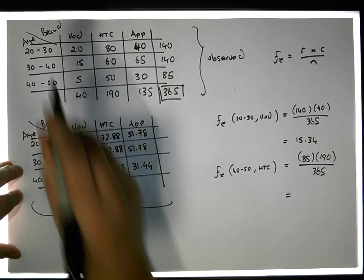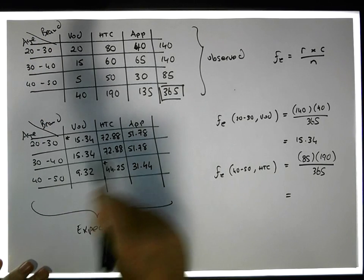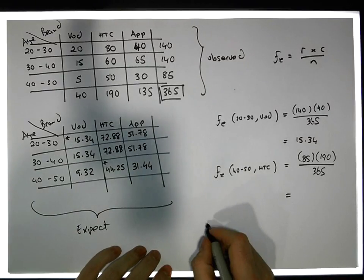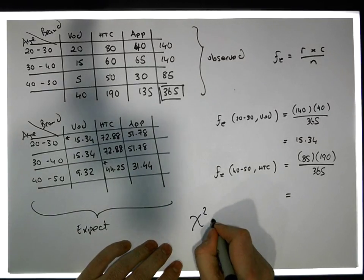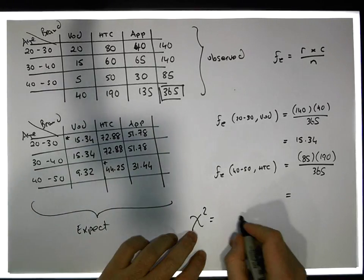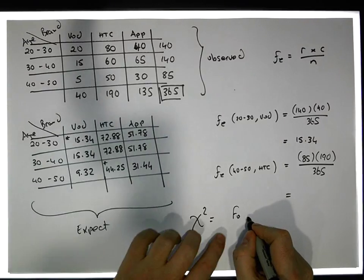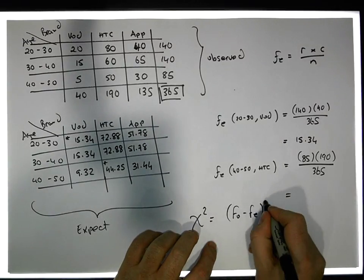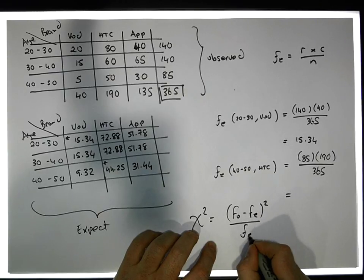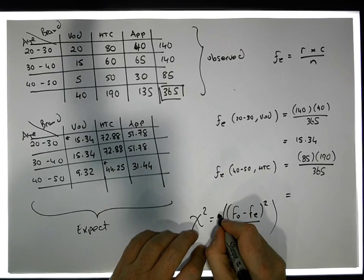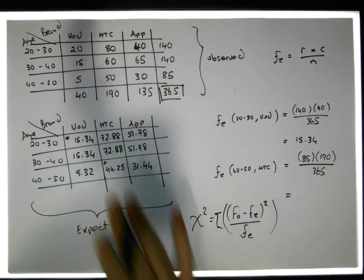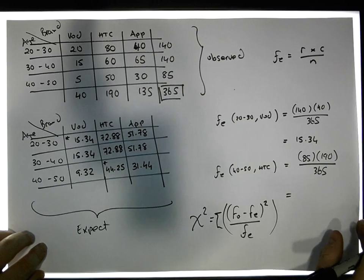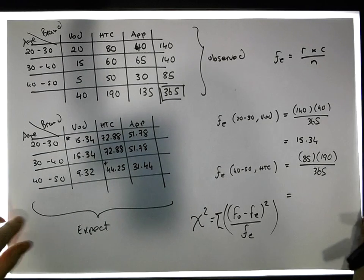If they were independent, those are the expected frequencies we would expect. Now the chi-square test statistic tells us to take our observed frequencies, subtract the expected frequencies, square them, and express them relative to the expected frequencies. That's the sum of these across all possible cells. We need to do this particular calculation in a moment.